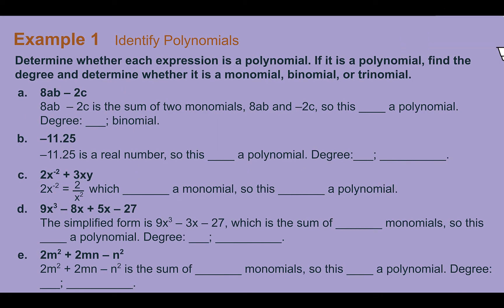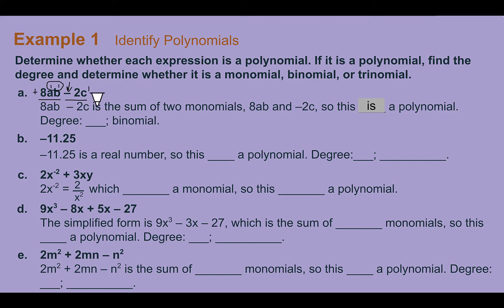Example 1: Identify polynomials. Determine whether each expression is a polynomial, find the degree, and determine whether it is a monomial, binomial, or trinomial. Part A: 8ab minus 2c. This is the sum of two monomials — 8ab and negative 2c — so this is a polynomial. Looking at degrees: 8ab has two variables each with degree 1, so combined degree is 2; negative 2c has degree 1. The highest is 2, so this is a second-degree or quadratic binomial.